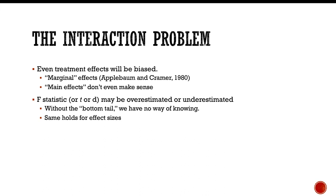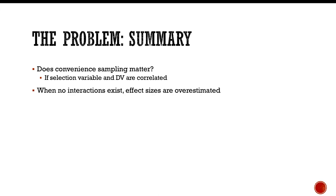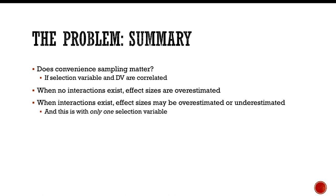So in summary, does convenience sampling matter? Yes, absolutely. At least in situations where the selection variable and the dependent variable are correlated. When no interactions exist, effect sizes will be overestimated. When an interaction exists, effect sizes may be overestimated or underestimated. And by the way, that is only the case with one selection variable. If you have more than one selection variable, it gets even more complicated than that.